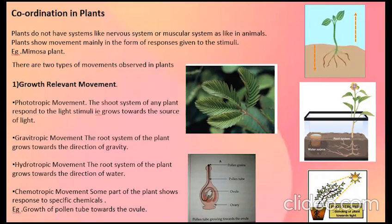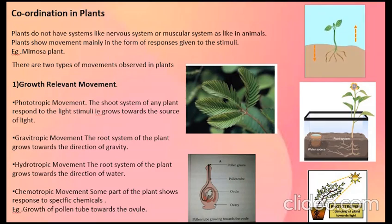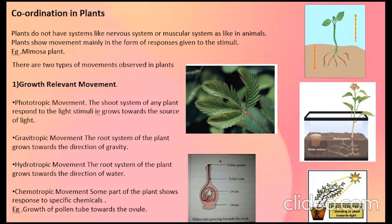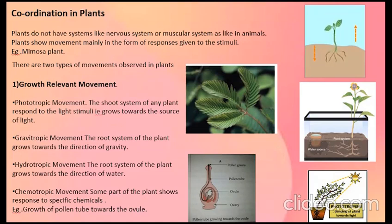There are two types of movements observed in plants. The first is growth-relevant movement, which has four types. Number one is phototrophic movement — the shoot system of the plant responds to light stimuli by bending towards the source of light. Number two is gravitrophic movement — the root system of the plant grows towards the direction of gravity.